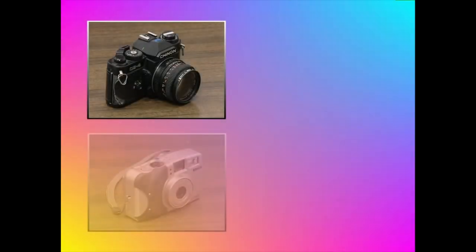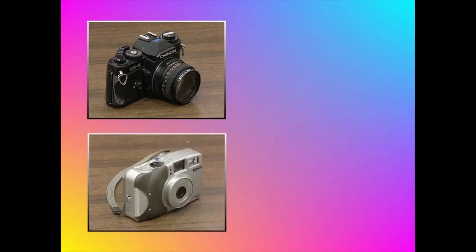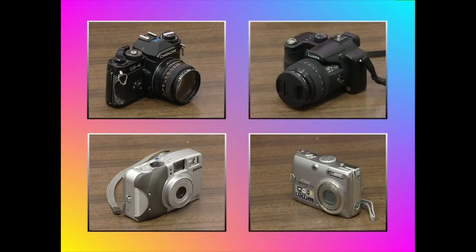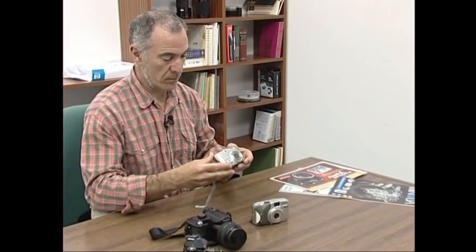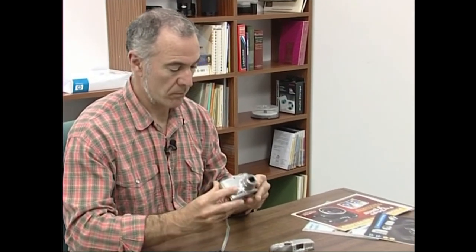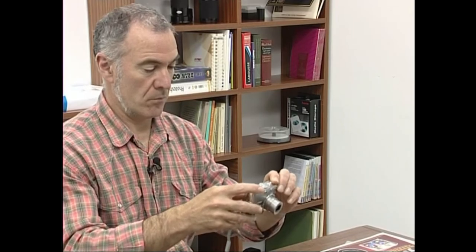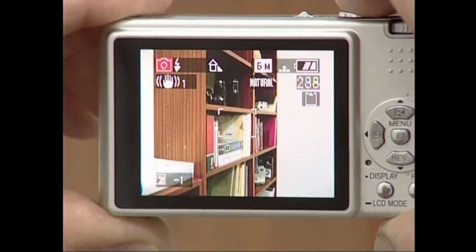Orain arte argazki kamera klasikoren bat erabili baduzue, haren antzeko argazki kamera digitala bilatu. Ez da zaila, argazki kamera digital gehienak argazki kamera klasikoen diseinuari jarraikiz egiten baitira. Badira ordea kontuan izan behar dituzuen hainbat ezaugarri: besteak beste, martxan jartzeko eskaintzen dituen erraztasunak, argazki artean azkar erantzuten duen ala ez, eta kalitate oneko objektibo optikoa duen ala ez. Ez zazue denbora galdu erabiliko ez dituzuen aparteko aukerekin: soinu grabazioa, film grabazioa eta horrelakoekin.